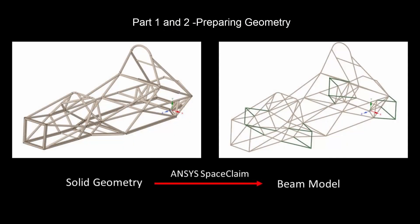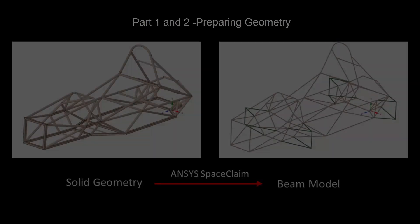In part 1 and 2, we will prepare the chassis geometry using the tools and features present within ANSYS SpaceClaim. These parts include steps like extracting beams, modifying beam profiles, importing coordinates, and 3D sketching.